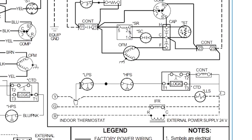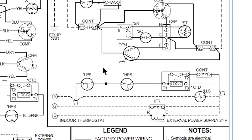Now for the pressure switches: when pressure increases, this one opens — it's normally closed. However, the factory actually labeled the diagram incorrectly, swapping the LPS and HPS labels. A low pressure switch should open when pressure falls and close when pressure rises. A high pressure switch should open when pressure rises. These two are switched on this diagram — just a little typo that often doesn't get caught for years because people aren't looking carefully at the actual diagram.